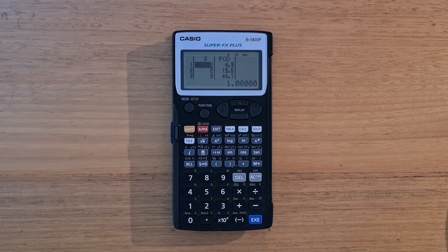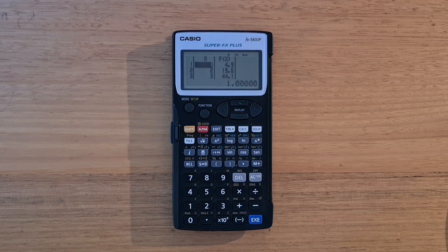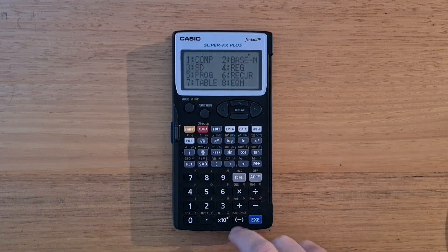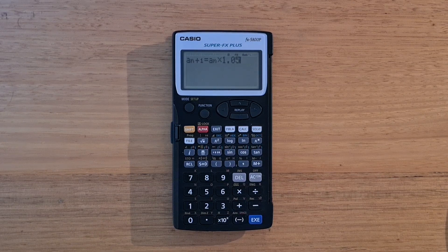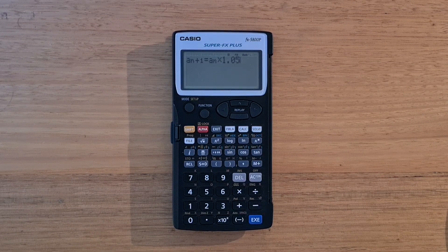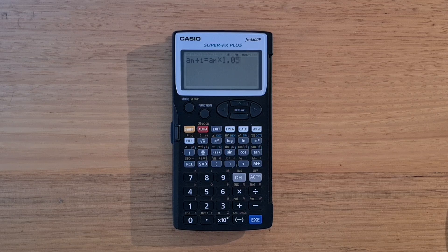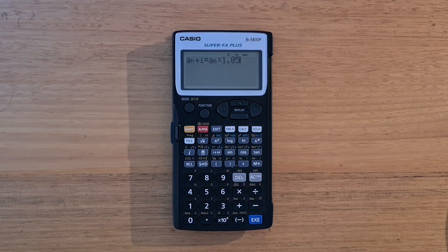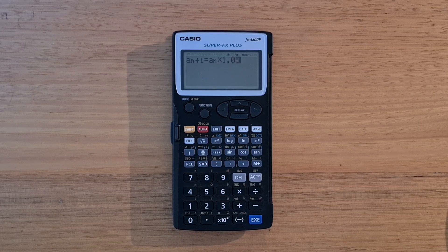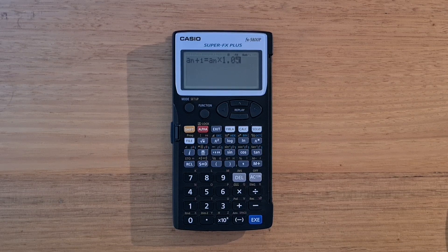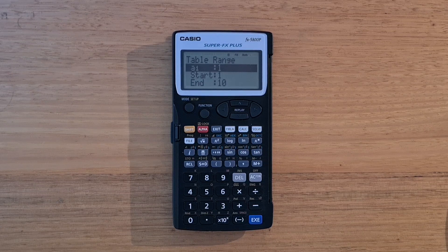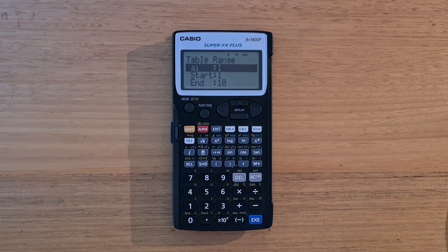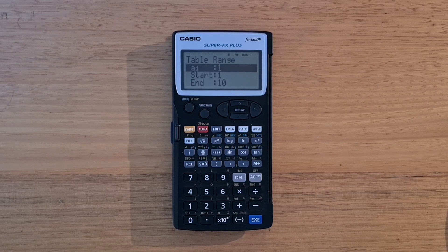The 5800P also supports similar functionality for a recursive series via mode 6. So say we were interested in an investment with 5% compounding growth, we can define A in terms of the previous A. And here again, we need to provide our table range, but also a value for A of 1.